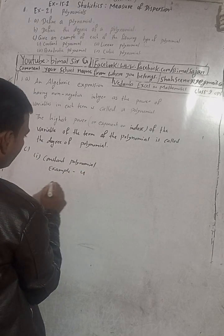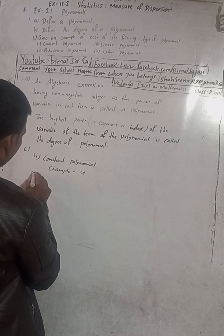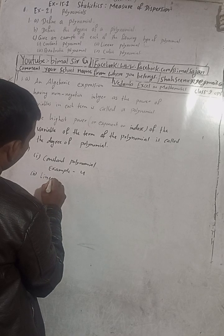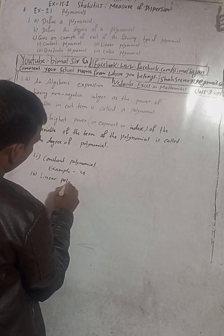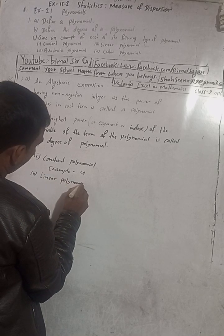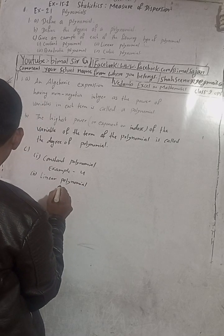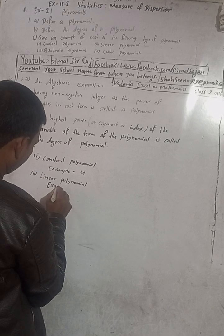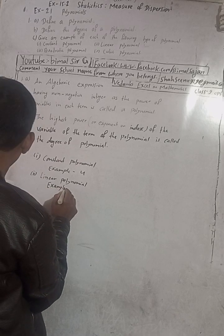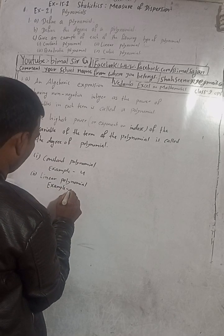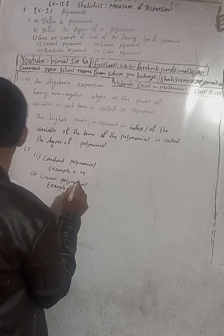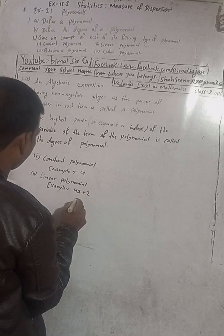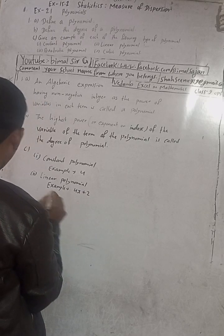Number two is linear polynomial. An example of a linear polynomial is 4x plus 2.